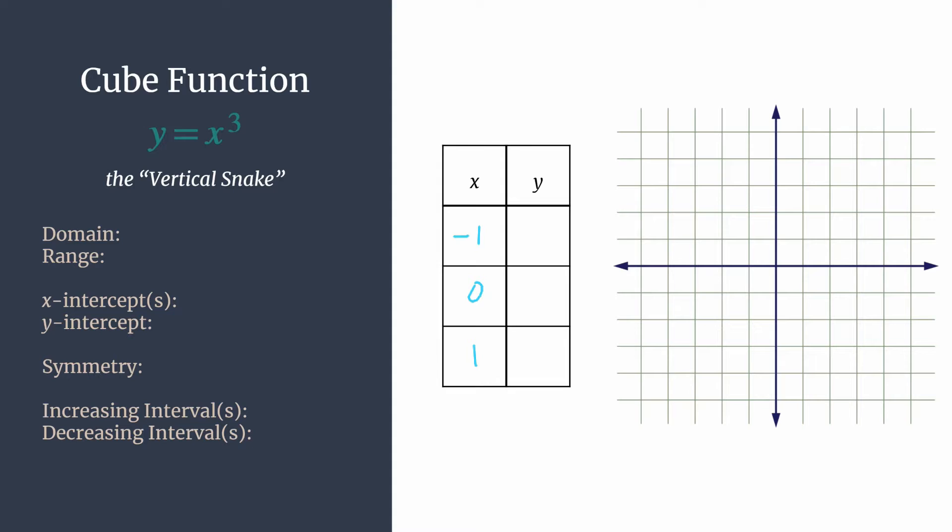And so we take each of these inputs and we cube it, or multiply it by itself three times. So negative 1 times negative 1 times negative 1. So three negatives will give us another negative, and negative 1 cubed is just negative 1 again.